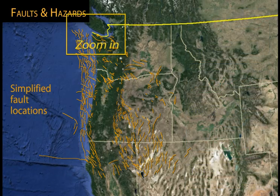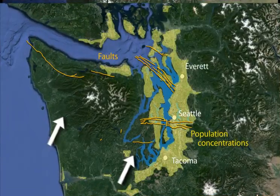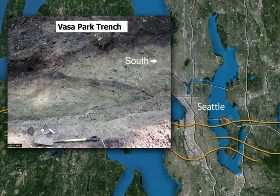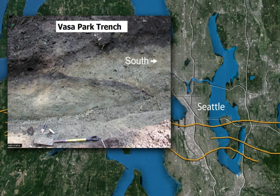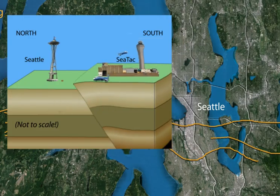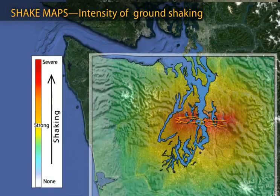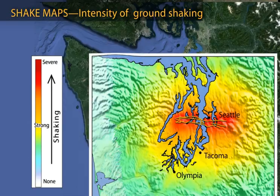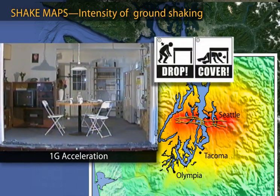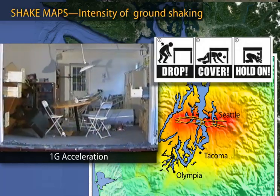An important example is the Seattle Fault Zone, which extends across the heavily populated southern Puget Sound area. Trenching provides direct evidence of south-side-up thrust fault displacement from a major magnitude 7 or 7.5 earthquake on the Seattle Fault about 1,000 years ago. This animation depicts exaggerated thrust faulting along the Seattle Fault Zone. Modeling of ground motions from a magnitude 7.2 earthquake are sobering — areas within a few miles of the Seattle Fault, including much of Seattle, would experience 20 seconds of severe ground shaking, as shown in this full-scale shake table experiment.